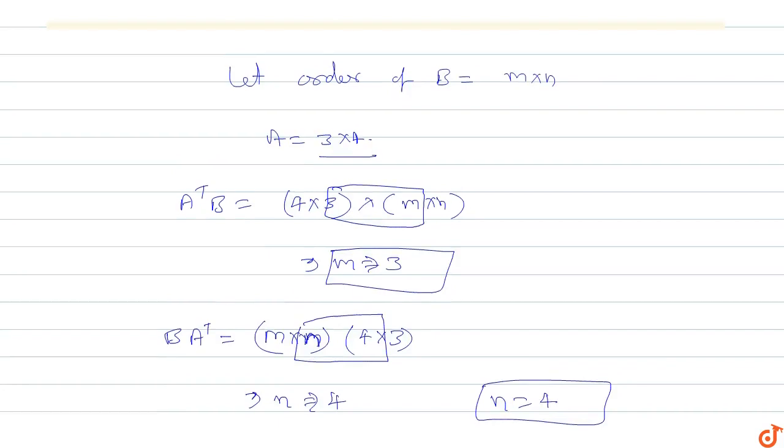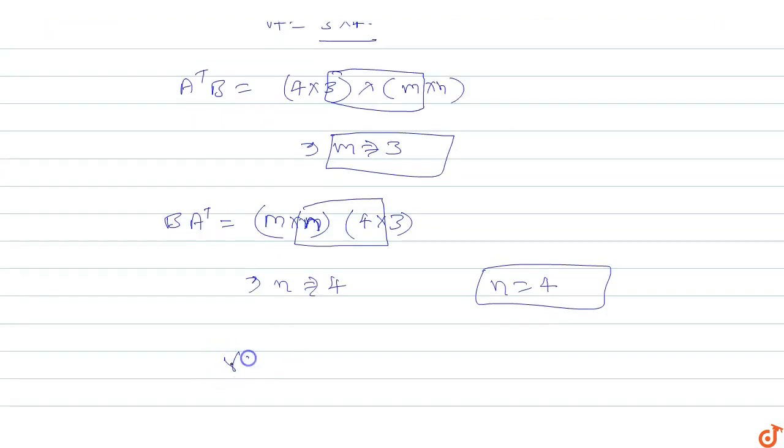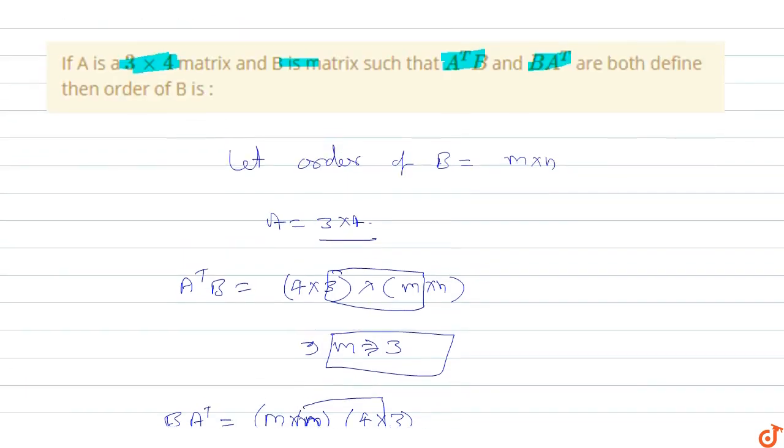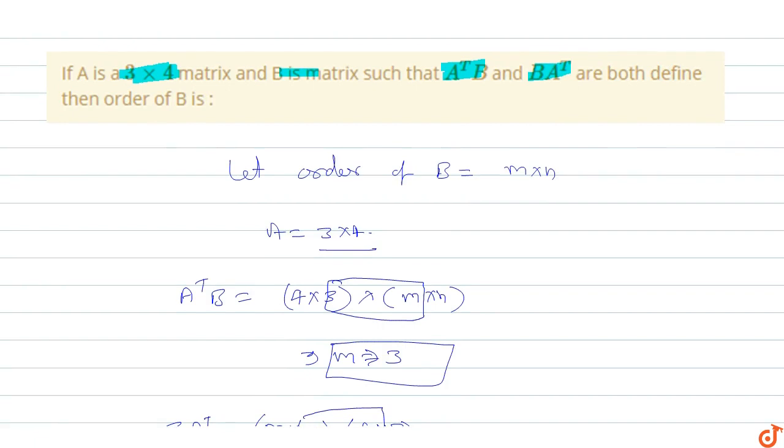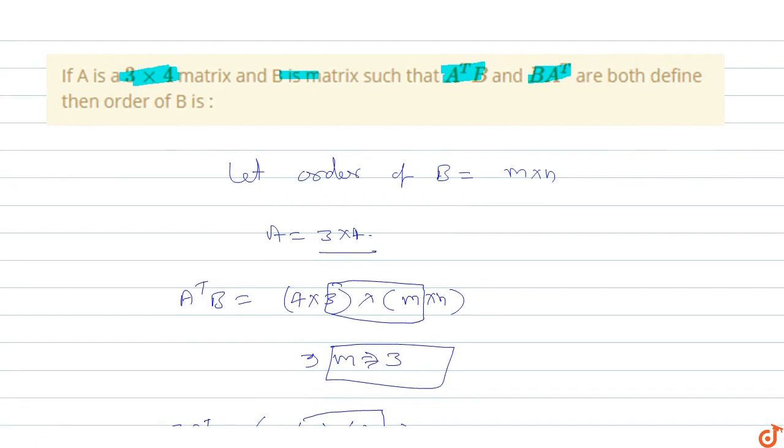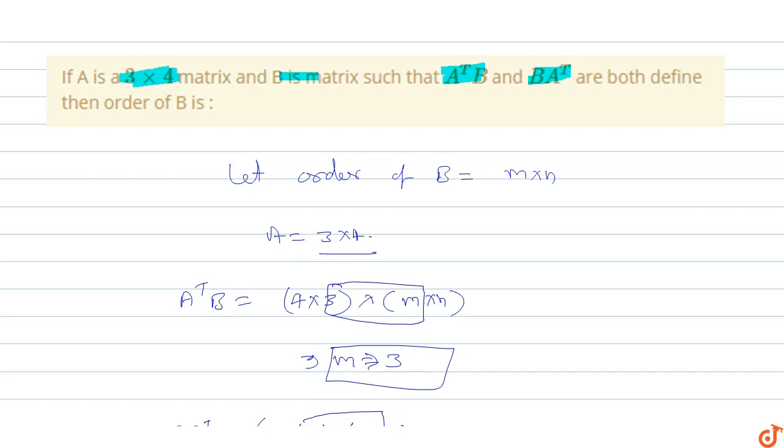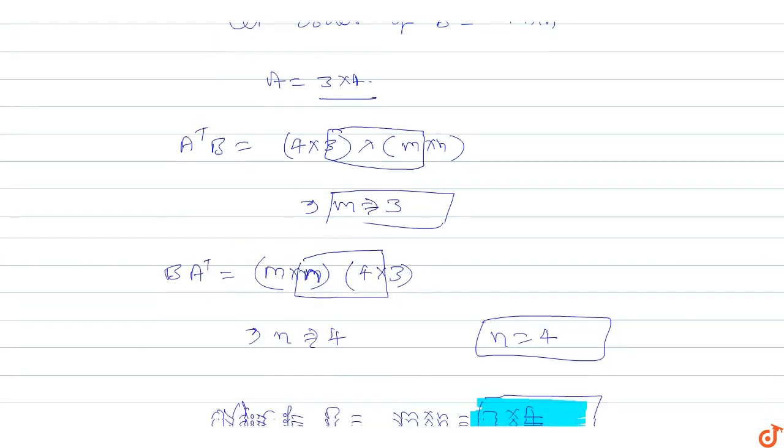Order of B is M cross N, which equals 3 by 4. So this is the answer for this question. When given that order of A is 3 by 4, and A transpose into B and B into A transpose both are defined, then order of B equals 3 by 4.